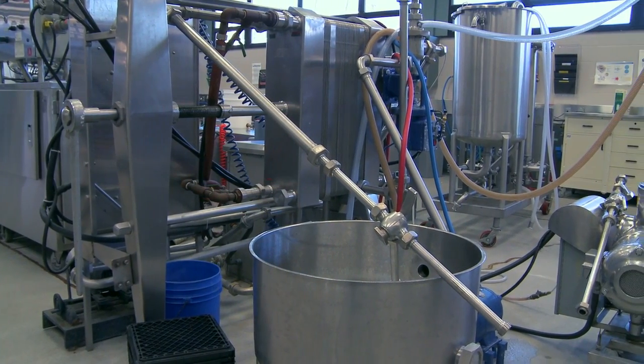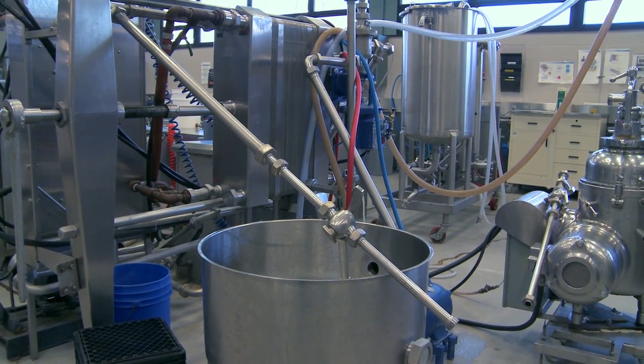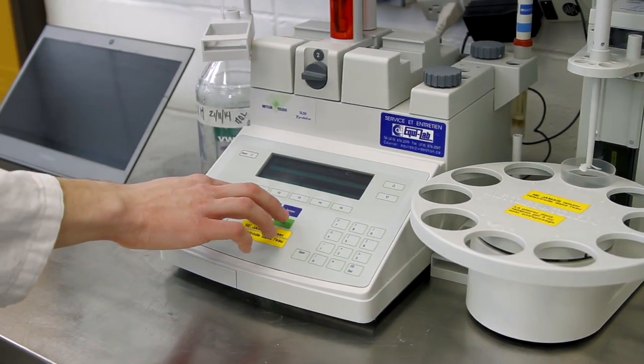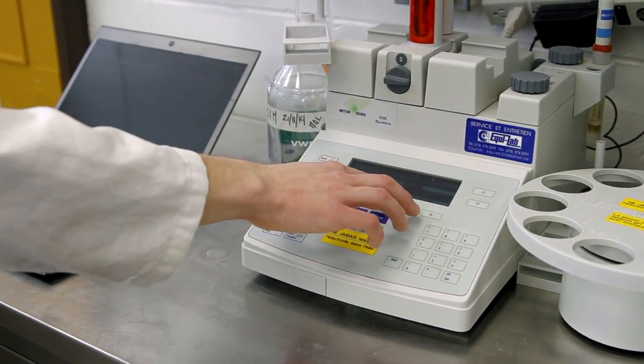Mon rôle dans ce projet-là est de comprendre d'une part comment se colmatent les membranes, mais surtout de savoir comment les biofilms se développent dans les membranes de filtration. Savoir est-ce qu'il y a des espèces qui vont accentuer le problème, est-ce qu'il y a des espèces qui adhèrent plus facilement que d'autres, est-ce qu'il y a des paramètres de filtration comme la température qui pourrait accentuer ou limiter le problème. Donc, mon rôle là-dedans, c'est de réaliser les filtrations, d'extraire tout l'ADN qu'il y a sur les membranes, ensuite de séquencer cet ADN-là pour identifier spécifiquement les bactéries qui s'accrochent sur mes membranes.